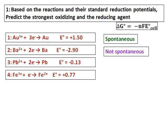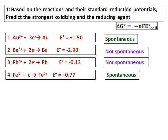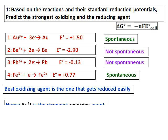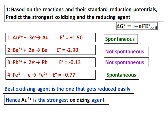The first reaction is spontaneous as written. The second and third are not spontaneous, and the fourth one is spontaneous as written. The best oxidizing agent is the one that gets reduced easily. Au³⁺ will be the strongest oxidizing agent because it has the largest positive E⁰ value, meaning that reaction is highly favored and Au³⁺ can be very easily reduced to Au.